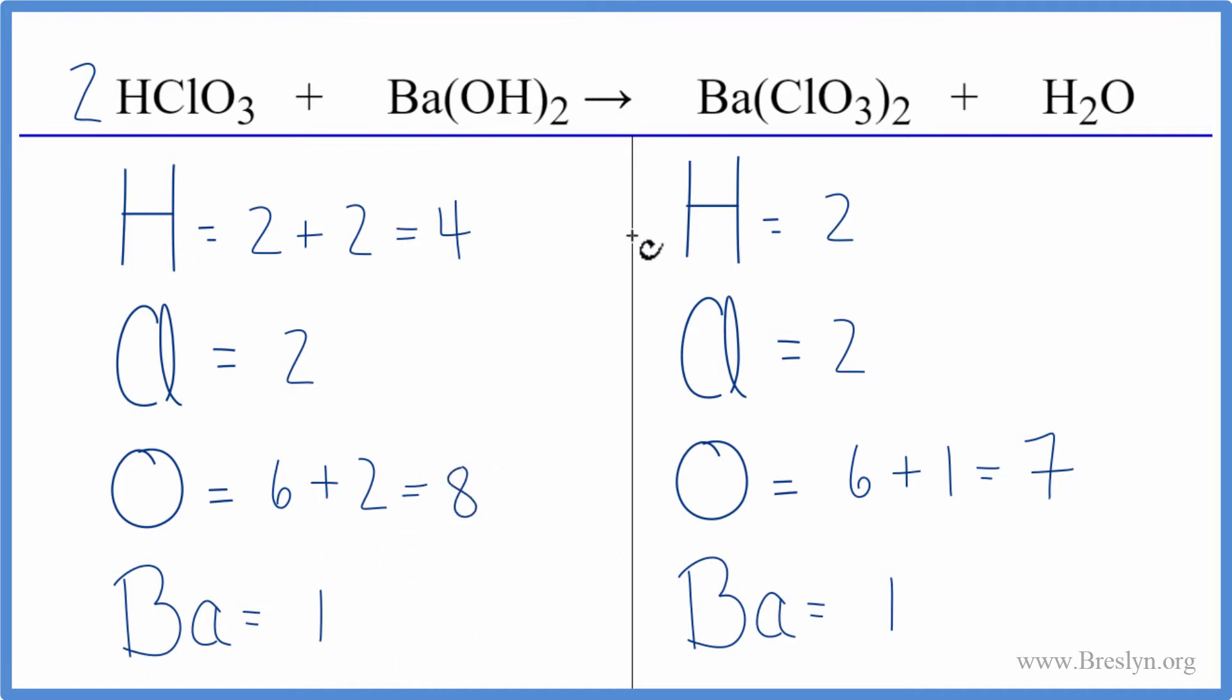We could fix the hydrogens. That might even fix the oxygens. If we put a coefficient of two in front of the H2O. Now we have two times two. That'll give us four. So the hydrogens are balanced.